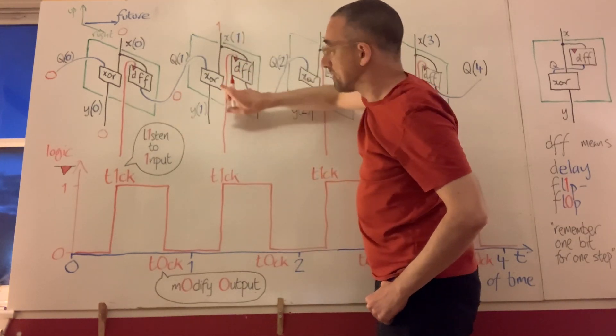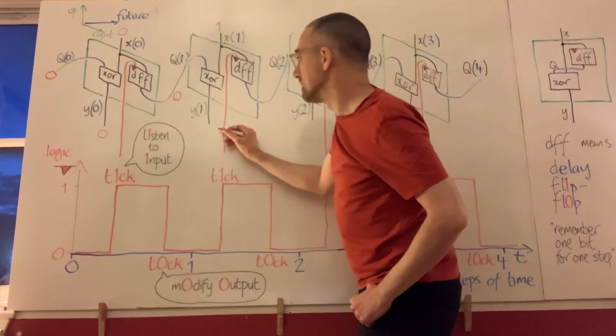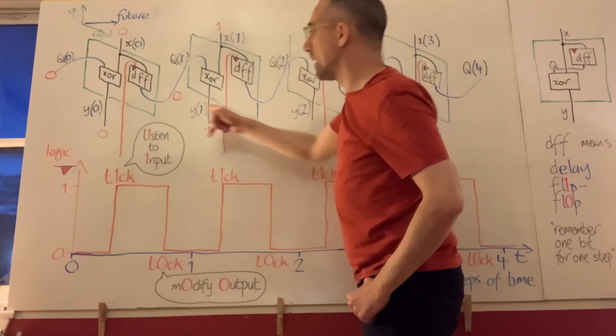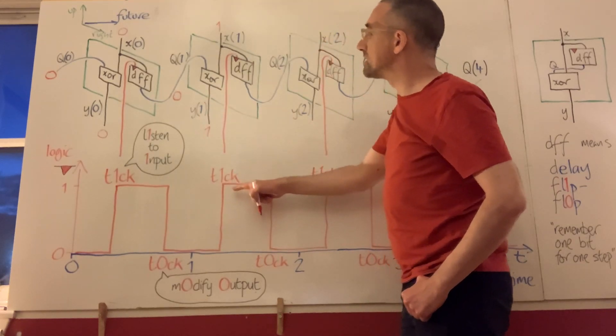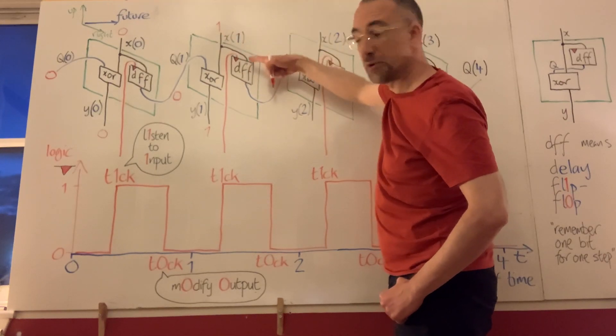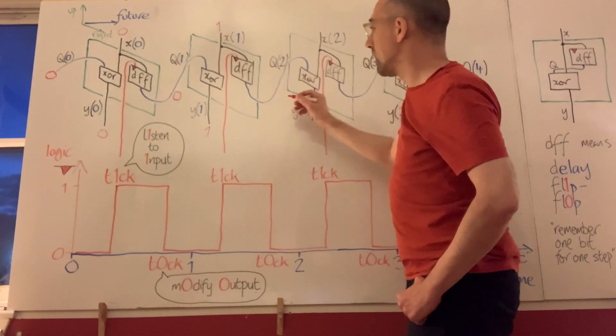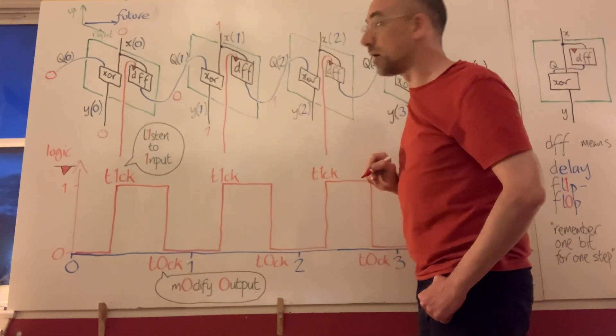by the ordinary logic of exclusive OR, they are different. So out comes a 1 at time 1. But also, when the tick happens, the flip-flop pays attention to its input, which is 1, and when the tock happens, it modifies its output. So that's now the 1.